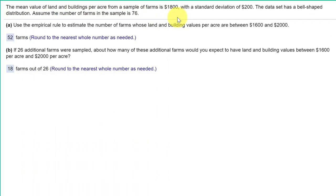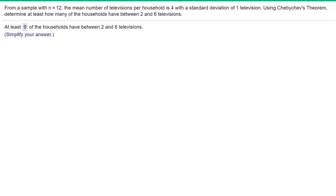Reading this problem, we are given the mean and standard deviation and we want to estimate the number of farms with values per acre between sixteen hundred dollars and two thousand dollars. But we are told the distribution is bell shaped, so we should not use Chebyshev's on this problem. Let's look at another.